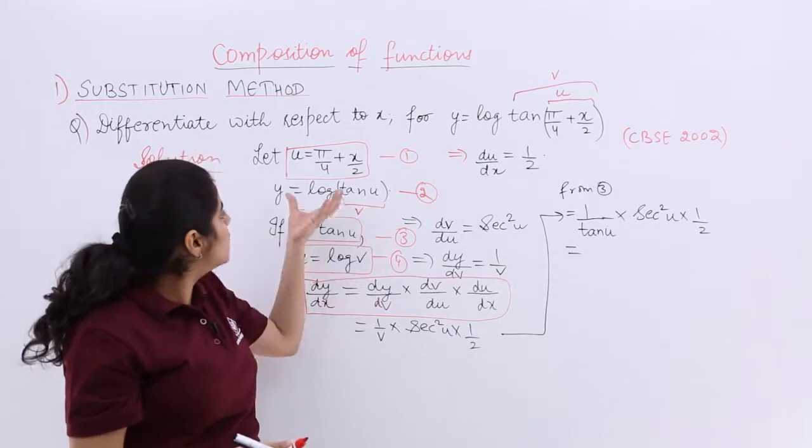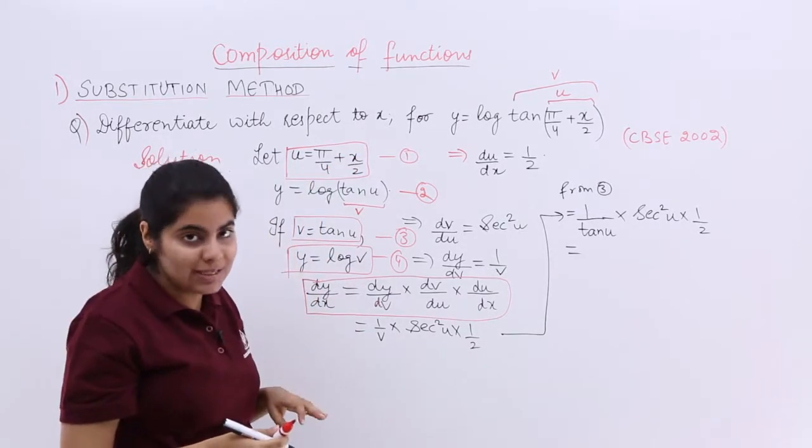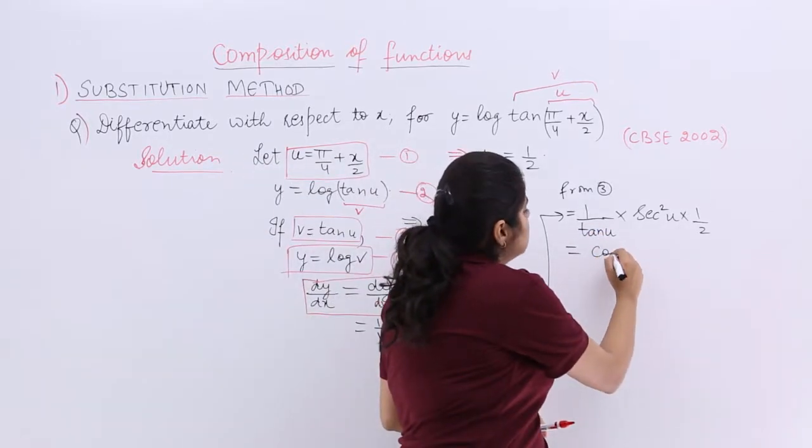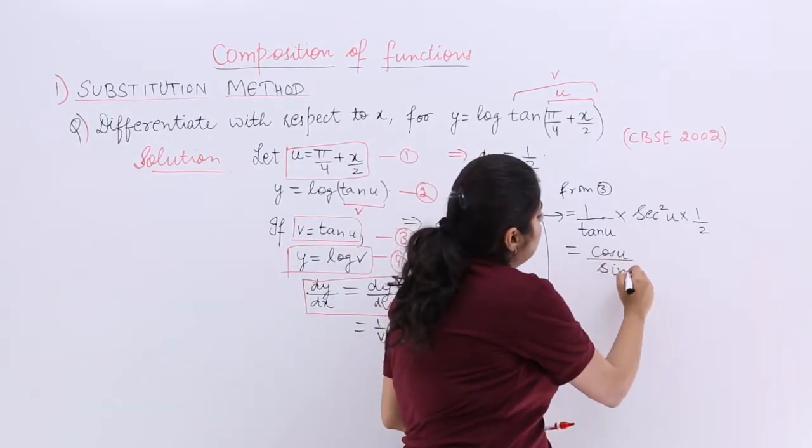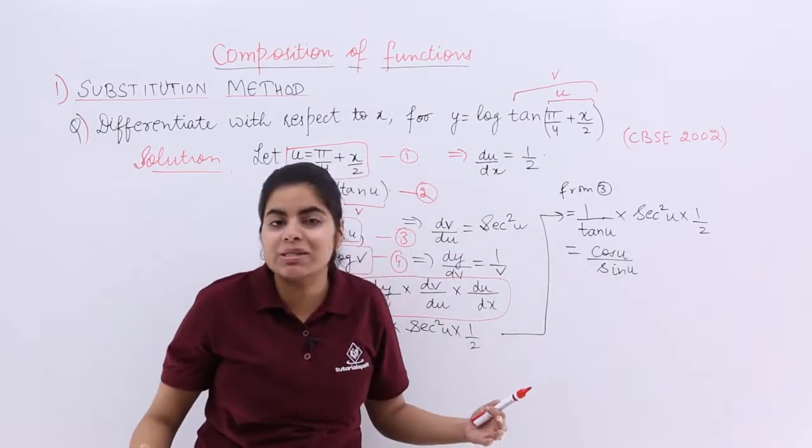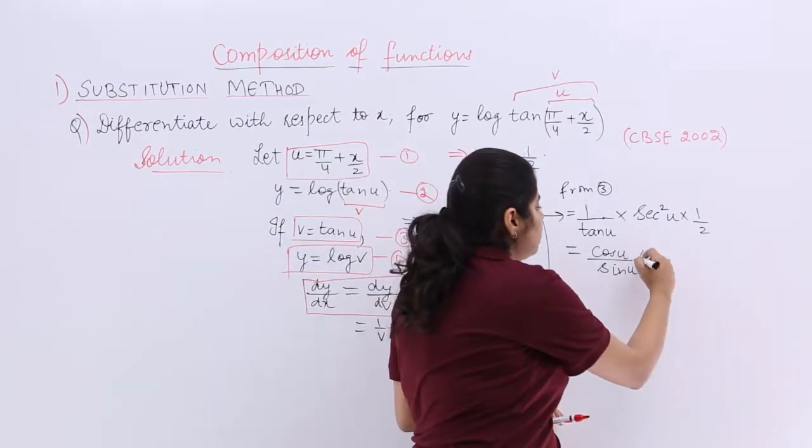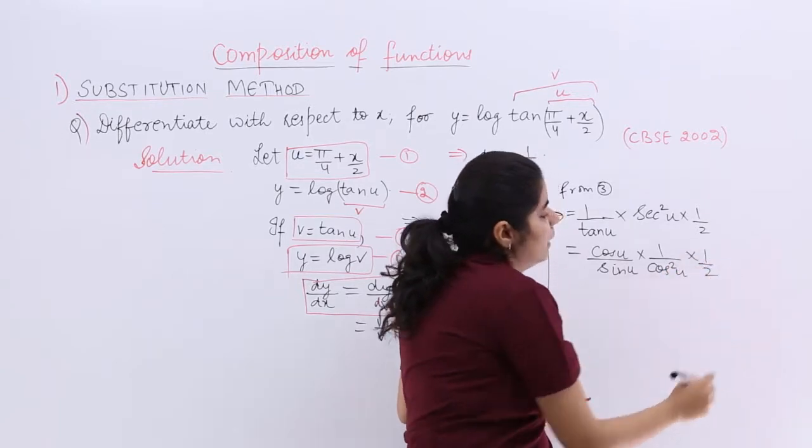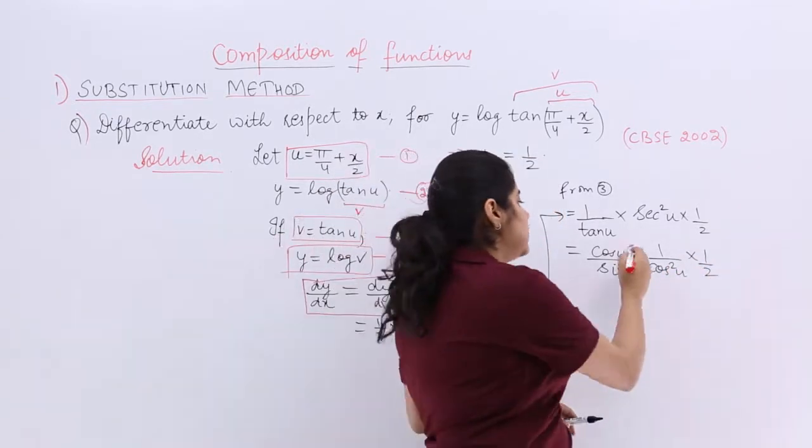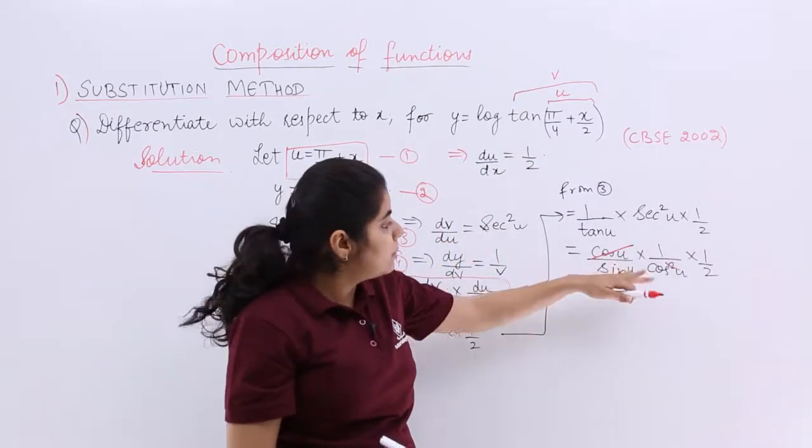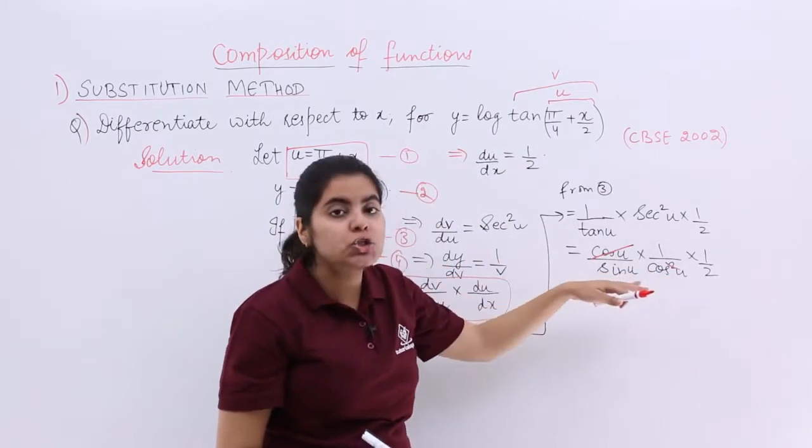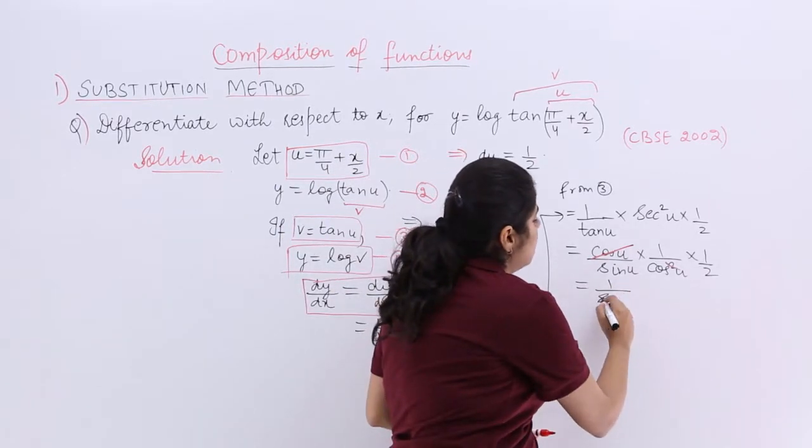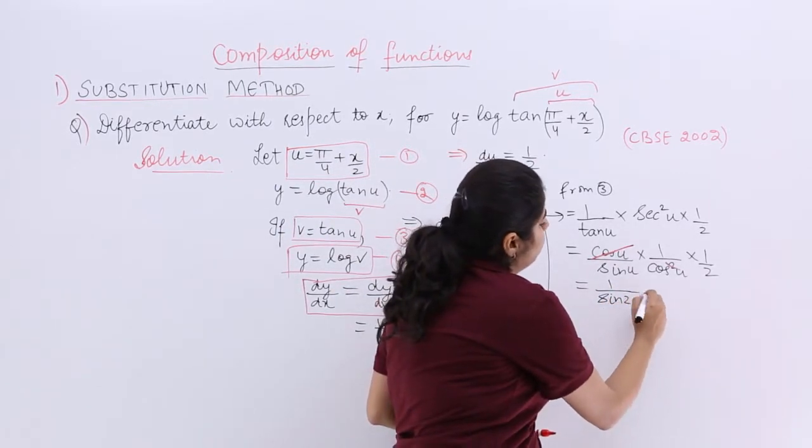Now what is u? What is u? u is pi by 4 plus x by 2 but first let's solve it clearly. So it becomes cos u upon sin u because tan theta can be split into sin theta upon cos theta. 1 upon cos square u multiply by 1 by 2. Cut, cancel if something does. So it becomes 1 upon 2 sin theta cos theta. 2 sin theta cos theta is sin 2 theta. So sin 2u, right?